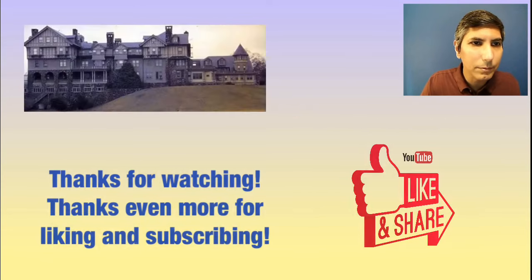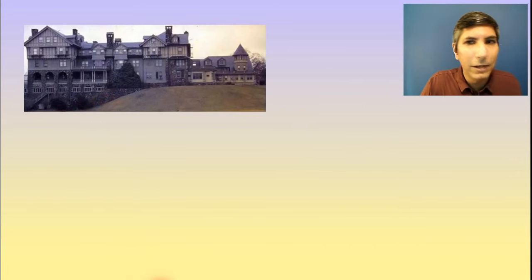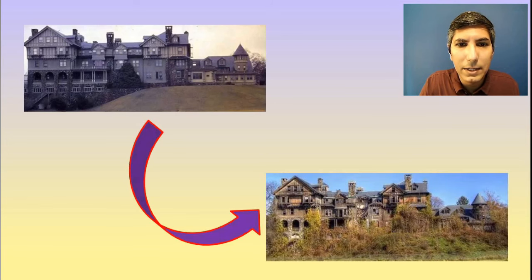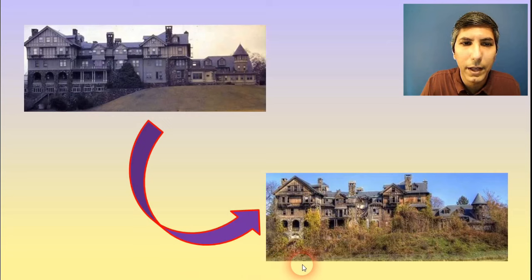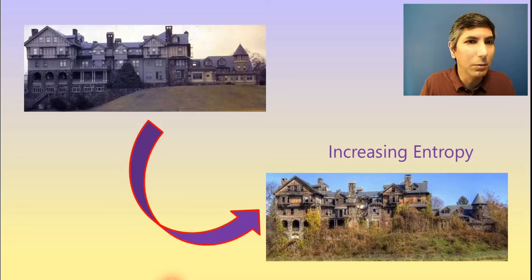Now here's another example. Here's a what looks to be a pretty nice looking house, mansion of some kind. And then if we were to just abandon that house, well, after maybe 10 or 20 years, this is what that same house looks like. As you can see, once again, very nice and orderly originally. In the second state, it is a whole lot more disorderly. It has more entropy. So we say that once again, this is increasing entropy.